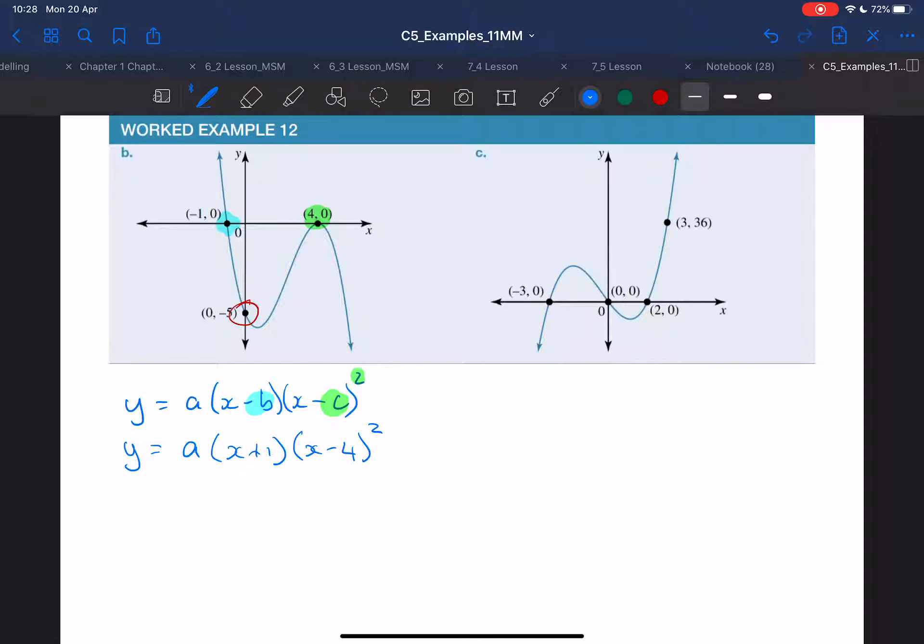Okay, so when y equals negative 5, a will equal, x equals 0. So it's going to be 0 plus 1, 0 minus 4 squared. It looks like a 6, sorry.